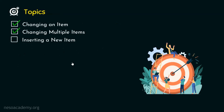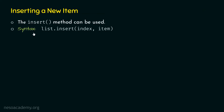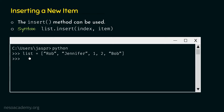Now let's understand how to insert a new item in a list. We can do that by using the insert method. The syntax is: list.insert(index, item), where index refers to the position where we want to insert the item, and item refers to the item which we want to insert. Let's open our command prompt and consider the same example list with five items.